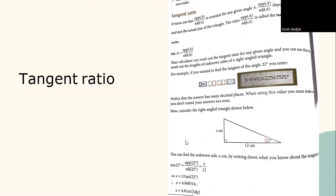Tangent ratio. It turns out that opposite A divided by adjacent A is constant for any given angle A. Opposite A divided by adjacent A depends on the angle and not the actual size of the triangle. So the ratio opposite A divided by adjacent A is called the tangent ratio, and the formula is: tangent A = opposite A divided by adjacent A.